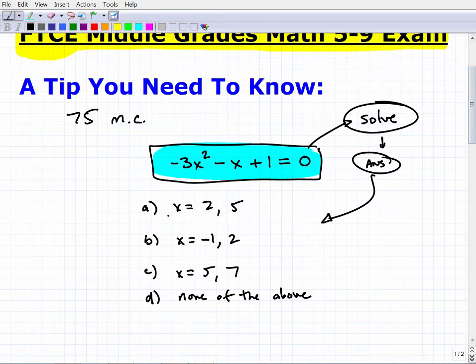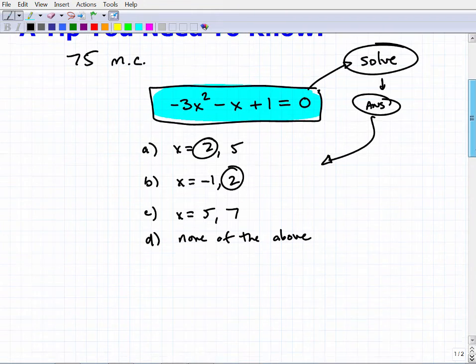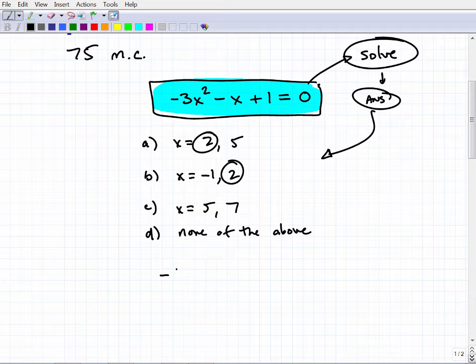So in other words, for example, here I have two options, A and B, both of them have two as possible solutions. Let's just quickly plug this in to this equation and see if this is a true solution. So I can go negative three, two squared minus two plus one is equal to zero.